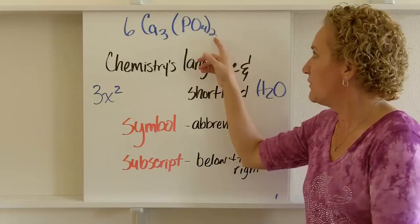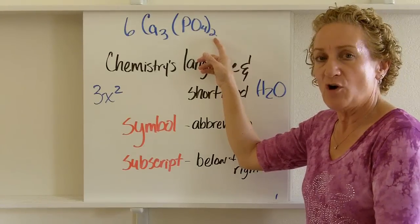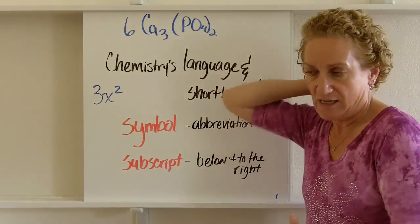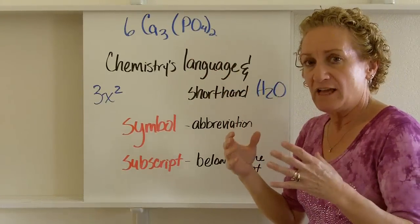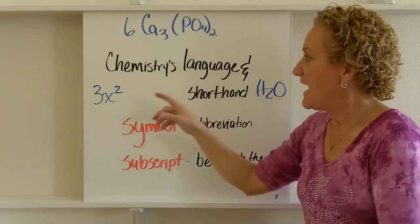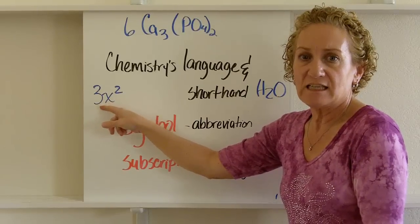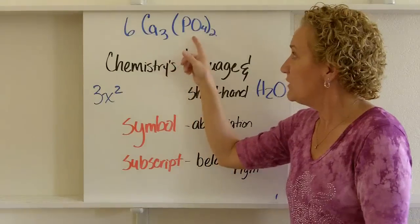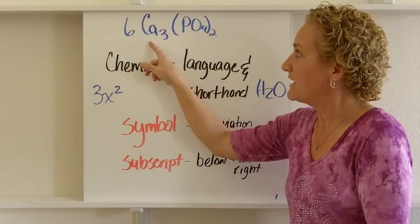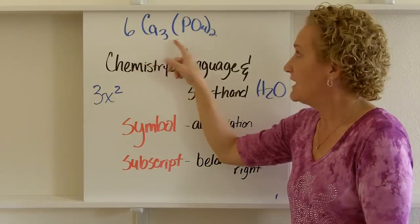Then we have a thing called a subscript. And a subscript is below and to the right of the thing that it's talking about. It's kind of like an exponent in that if you had 3x², that square only acts on the x. It doesn't act on the 3. Well, that's what it is for this. This 3 only acts on the calcium. It doesn't act on anything else.